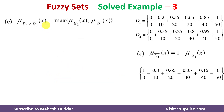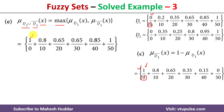Next, we calculate the membership value of x in D1 union D1 complement. We already have the complement of D1. The union is the maximum of the membership value in D1 and its complement. For element 0, the membership value is 0 in D1 and 1 in its complement, so the maximum is 1. For element 10, it is 0.2 in D1 and 0.8 in its complement, so 0.8 is in the union, and so on.